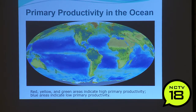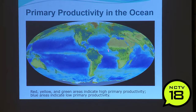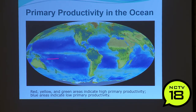Here's a primary productivity chart of the whole ocean done through satellite imaging. Red, yellow, and green areas indicate high primary productivity; blue areas indicate low — almost desert-like. Up near the poles there's a lot of fresh water and nutrients so it's very productive. Right along the coasts is highly productive, and along the equator with heat, nutrients, and upwelling, you have big bursts of really productive area.